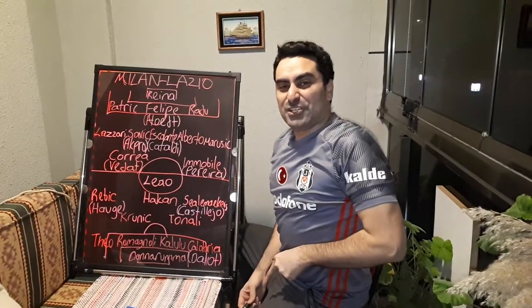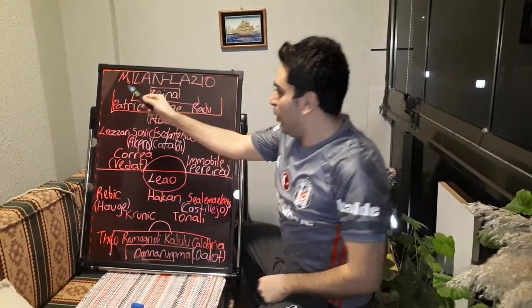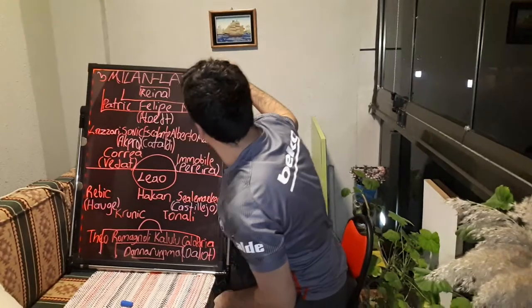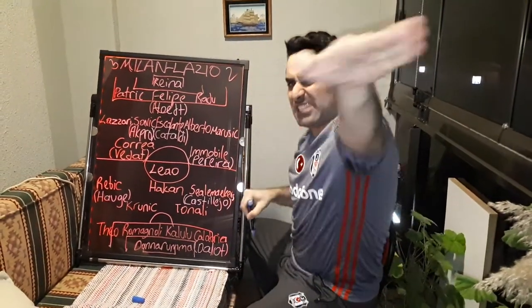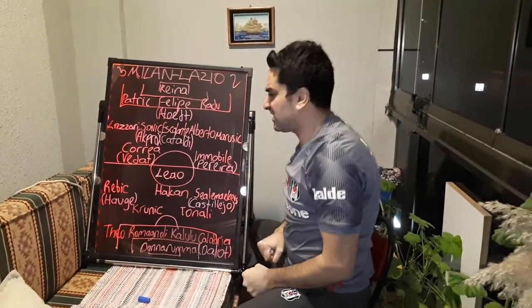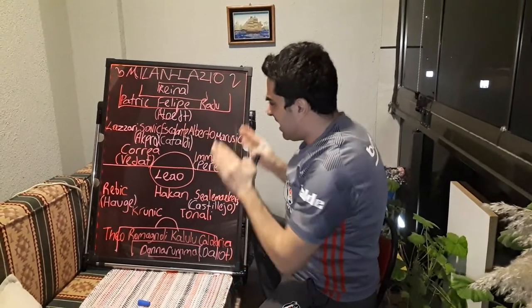This is the Italian Football Lover Channel. Milan won 3-2 against Lazio, and I want to make an analysis and talk about the tactics of this game. Let's start.